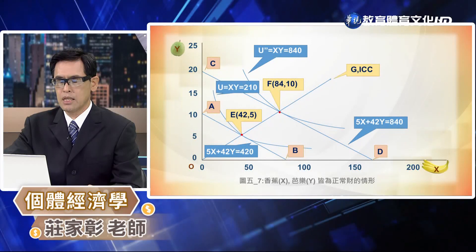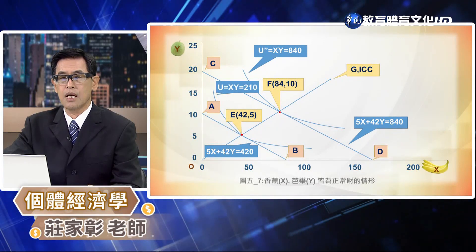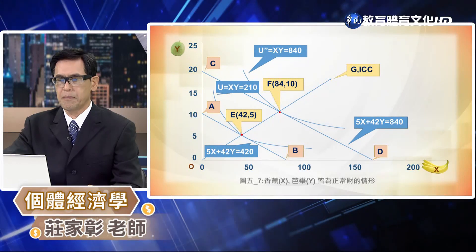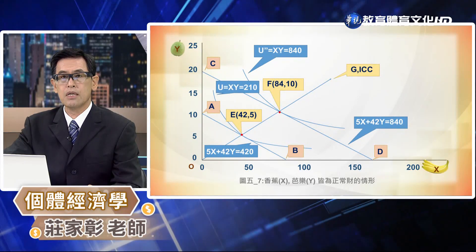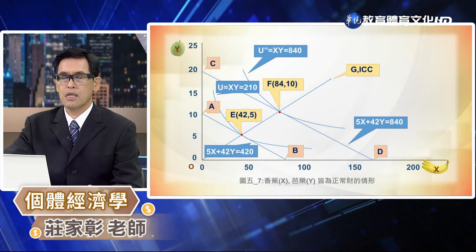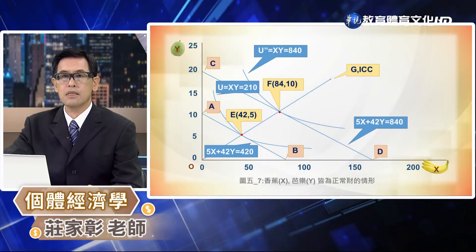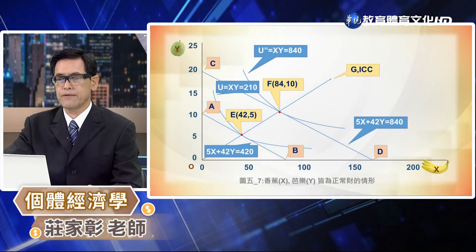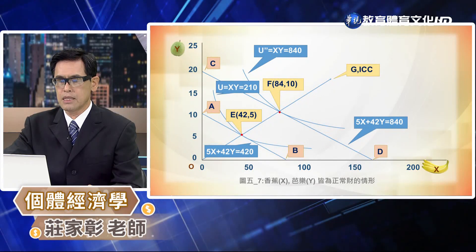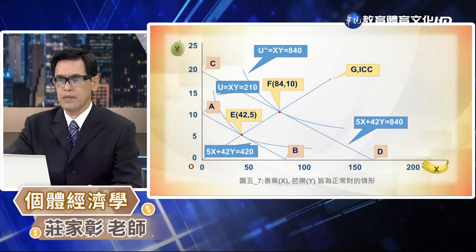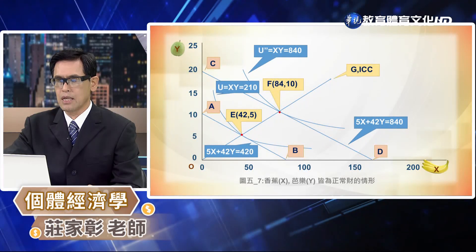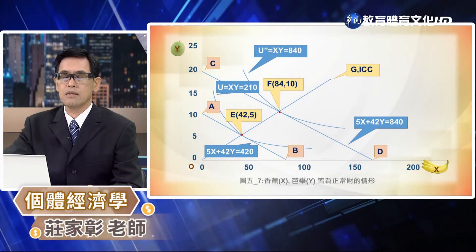在圖5-7當中我們可以看到，當所得從420元變成840元的時候，香蕉跟巴勒的價格都維持在5塊錢跟42塊錢沒有發生改變，唯一改變的是所得水準。這個時候模甲的消費數量在香蕉而言是從42單位增加到84單位，在巴勒的消費數量上面是從5單位增加到10單位，均衡點從 E 點移動到 F 點，把 E 跟 F 連接起來就會變成一條所得消費線。